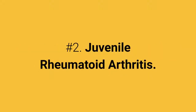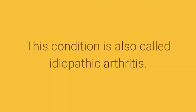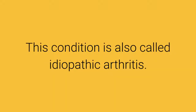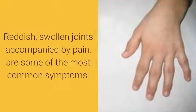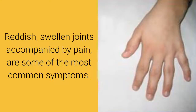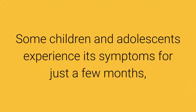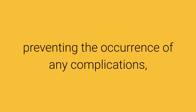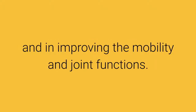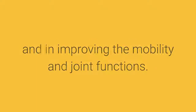Number 2: Juvenile Rheumatoid Arthritis. This condition is also called idiopathic arthritis. This type of arthritis affects children and adolescents below the age of 16. Reddish, swollen joints accompanied by pain are some of the most common symptoms. Some children and adolescents experience its symptoms for just a few months, whilst others suffer for the rest of their lives. Treatment is mostly focused on keeping the pain under control, preventing complications, and improving mobility and joint function.